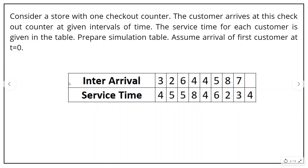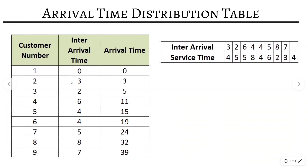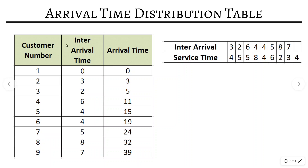Since we know the inter-arrival time and service time, next we will calculate the arrival time. The columns required are: customer number, inter-arrival time, and arrival time. We don't need a random digit column right now. We will assign inter-arrival time sequentially. If you remember, we never assign any inter-arrival time for the first customer — we always assume the arrival time for the first customer is zero. Now, how many customers should we take? The question does not mention how many customers are required for the simulation table.